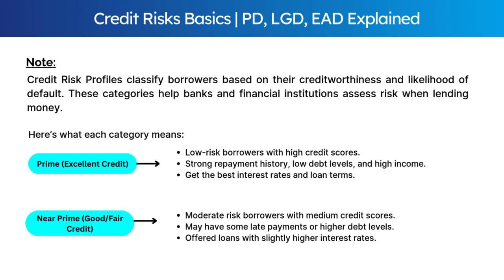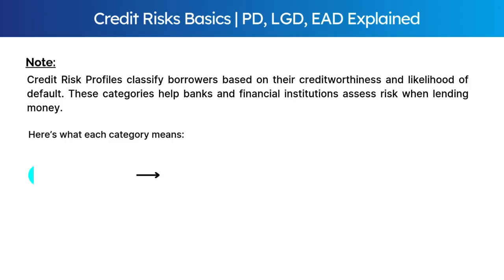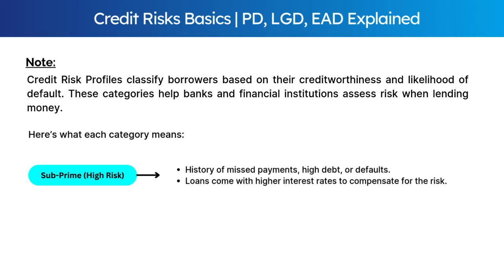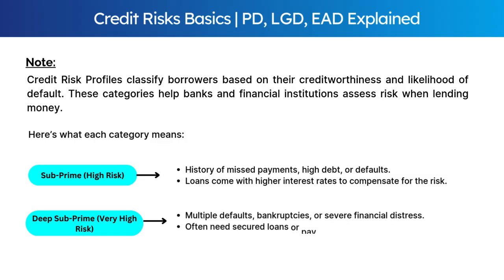Next is the near-prime category — moderate-risk borrowers who may have some late payments or higher debt levels, and are offered loans with slightly higher interest rates. Next is the subprime category, consisting of borrowers with a history of missed payments, high debt, or defaults. Their loans come with higher interest rates to compensate for the risk. The last category is deep subprime — borrowers with multiple defaults, bankruptcies, or severe financial distress, who often need secured loans or pay extremely high interest rates.